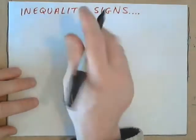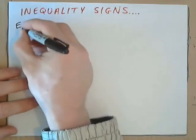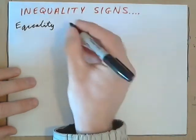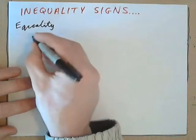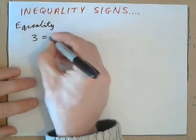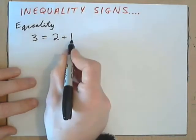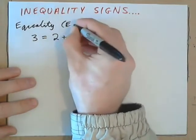Okay, let's have a look at inequality signs. First of all, we'll look at what an equality sign is. Equality is when you have, say, 3 is equal to 2 plus 1. This quantity is the same as this quantity. This is also called an equation.